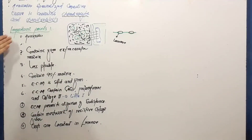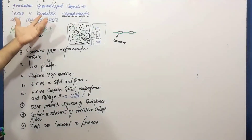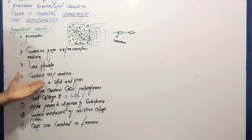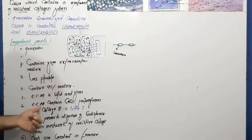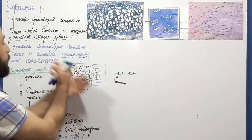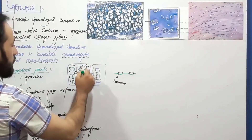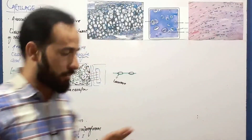To summarize: cartilage is a specialized connective tissue that contains a meshwork of resistive collagen fibers, made up of chondrocytes, chondroblasts, and extracellular matrix. Key points: it is avascular, contains firm extracellular matrix, is less pliable, contains 95 percent matrix with very few cells, the matrix is solid and firm, contains GAGs, proteoglycans and collagen type 2 (mostly) plus a little type 1, the ECM permits diffusion of substances, and cells are located in specialized areas called lacunae.